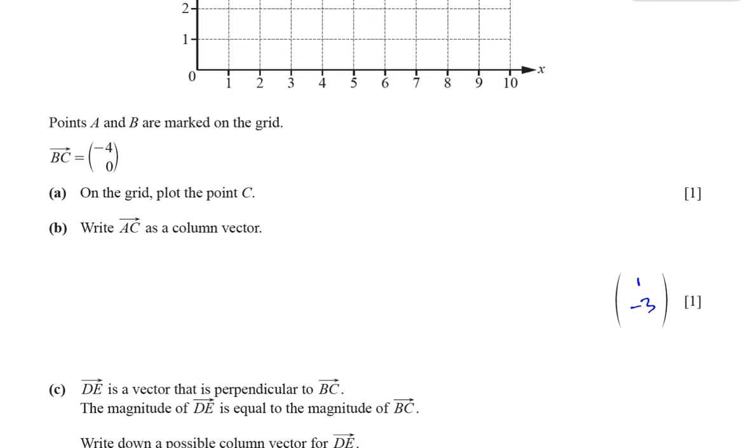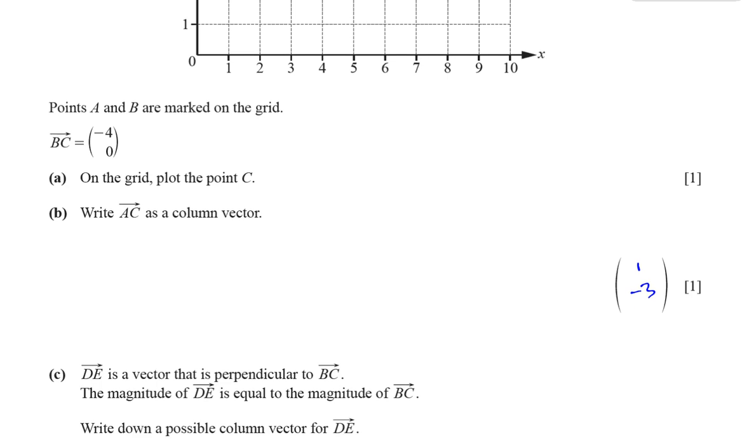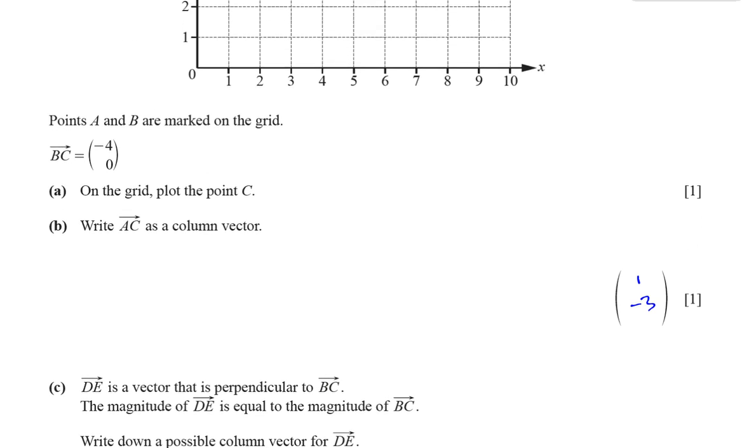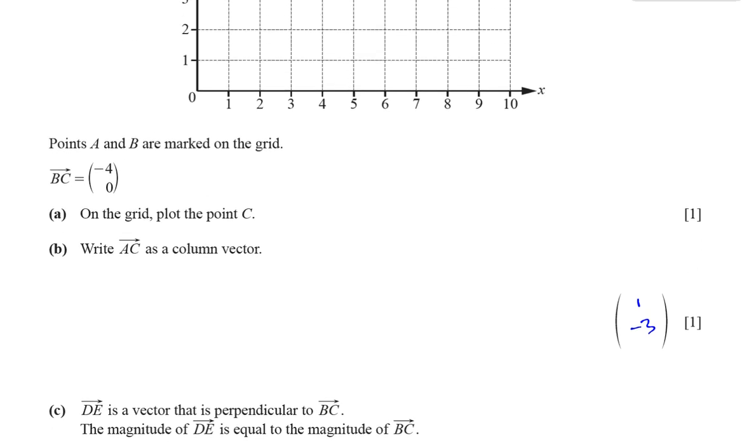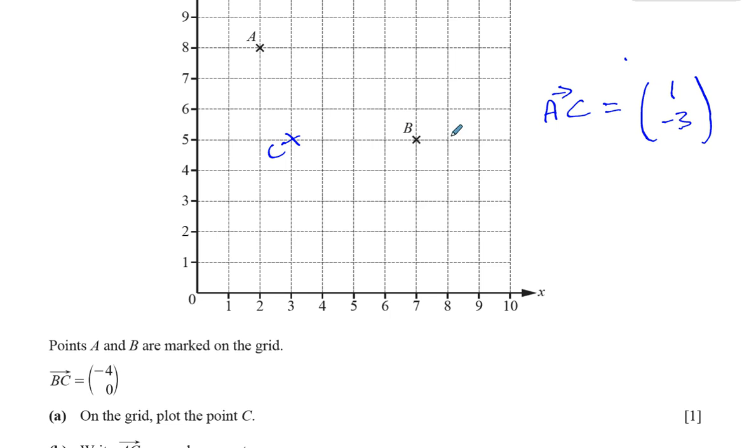Then it says, part C, D to E is a vector that is perpendicular to BC. The magnitude of D to E is equal to the magnitude of B to C. So D to E is a vector that is perpendicular to B to C. So they're perpendicular to each other, means they're at right angles to each other. The magnitude of D to E is equal to the magnitude of B to C, means they're at the same length. Write down a possible column vector for D to E. Now if you can see BC here, BC is basically a horizontal line.